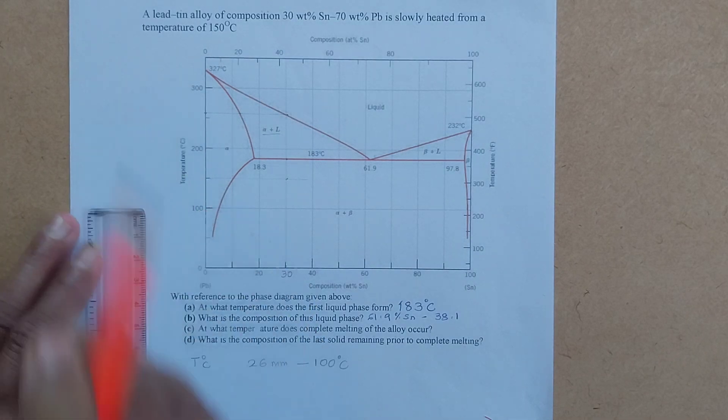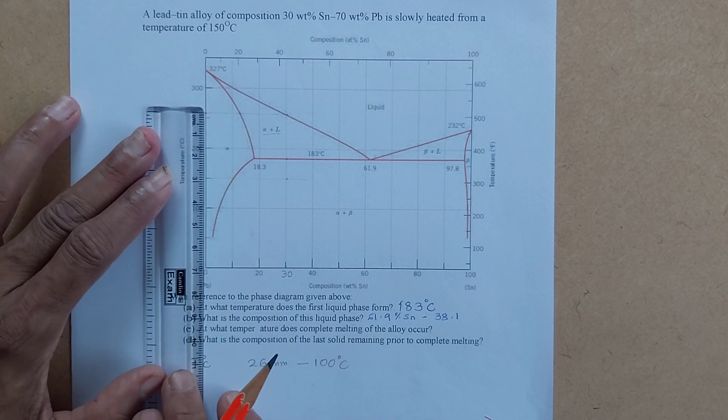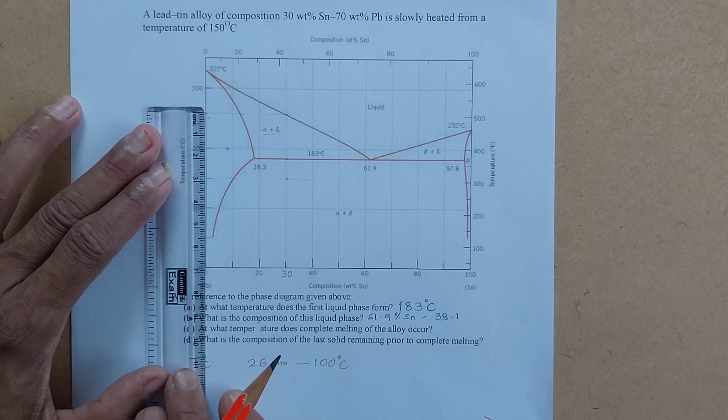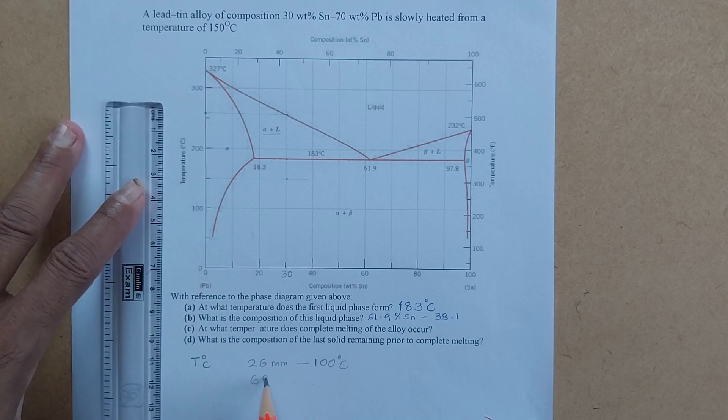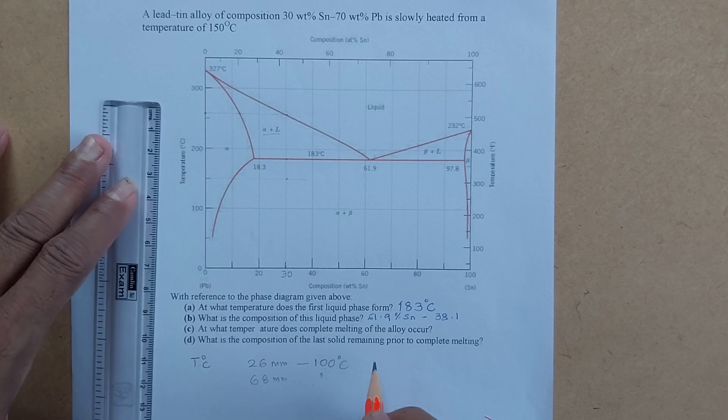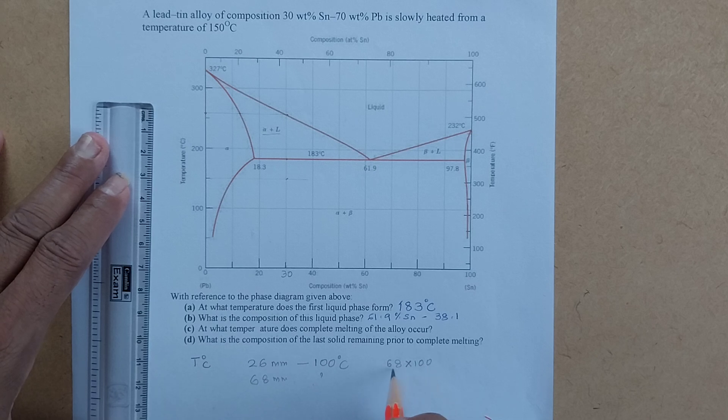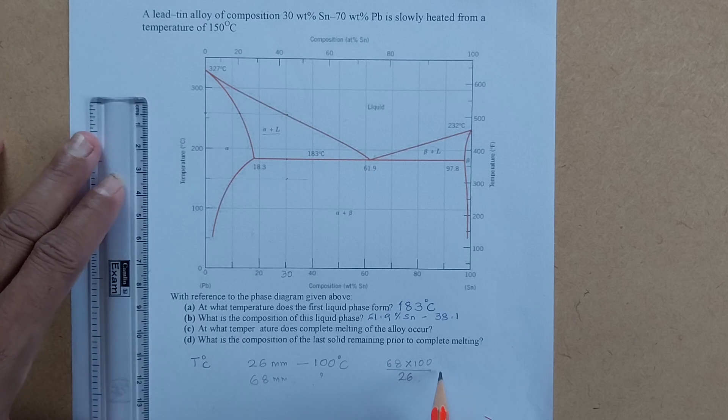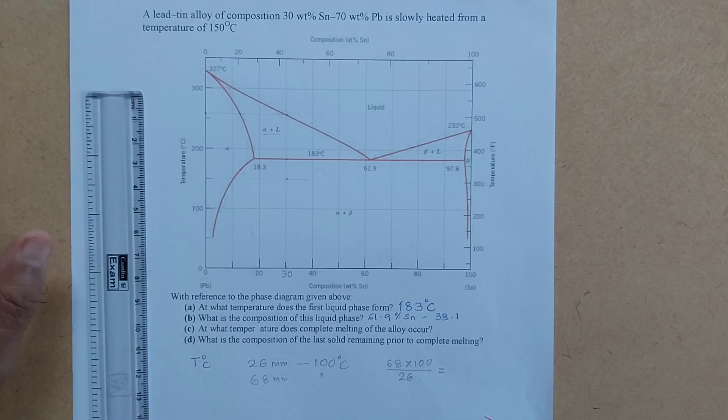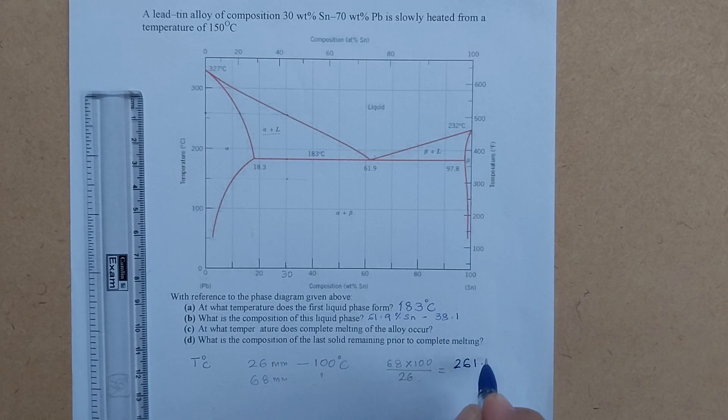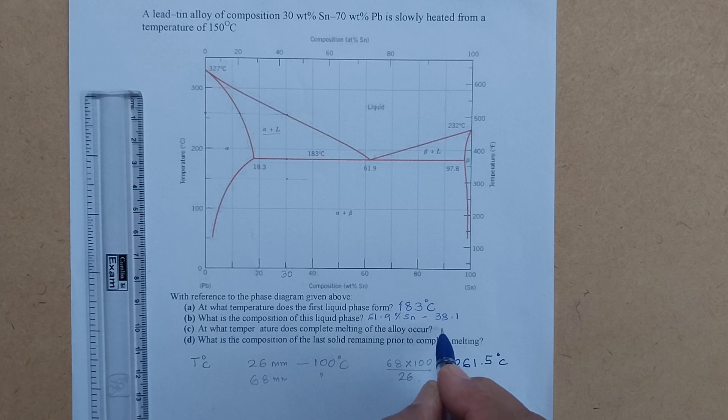So since we are interested in this temperature, we measure the distance. What is the distance? The distance here is 68 mm. So what will be 68 mm? That will be obtained when you cross multiply and divide. So we will have 68 multiplied by 100 divided by 26. And therefore, this amounts to 261.5. So this is 261.5 degrees Celsius. That is the temperature. This is the answer for C.